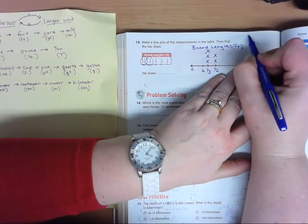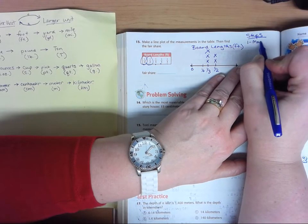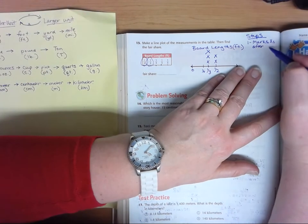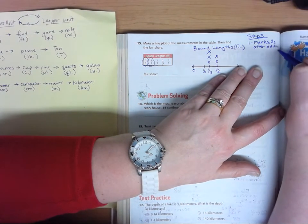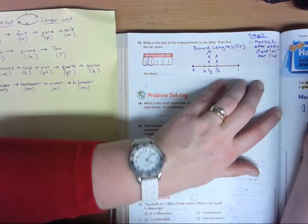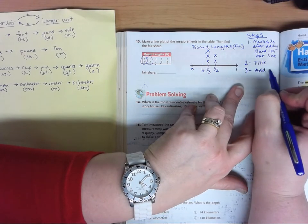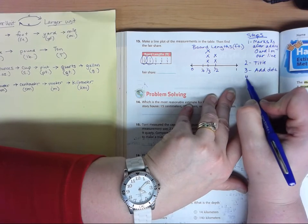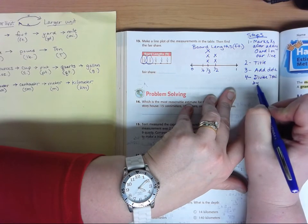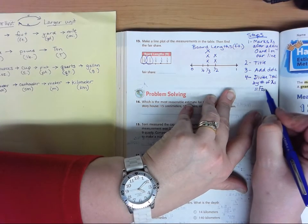Here's our steps to do this. One, mark X's after adding zero and one on our line. Then we give it a title. Then we're going to add our data. And then finally, we're going to divide total by number of X's, and that will give us our fair share.